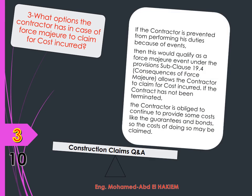Question 3: What options does the contractor have in the case of force majeure to claim for costs incurred? Answer: If the contractor is prevented from performing his duties because of such events, this would qualify as a force majeure event under the provisions of sub-clause 19. The consequences of force majeure allow the contractor to claim for costs incurred.